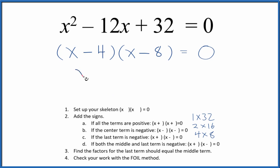So we could say x minus 4 equals 0, x would equal 4. And then x minus 8 equals 0, x would equal 8.